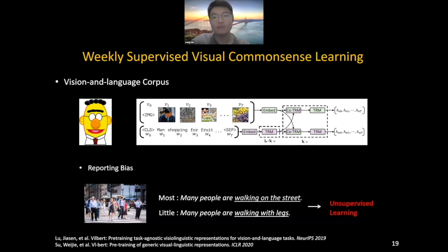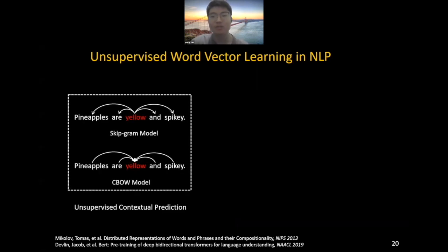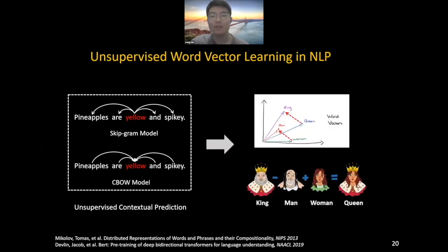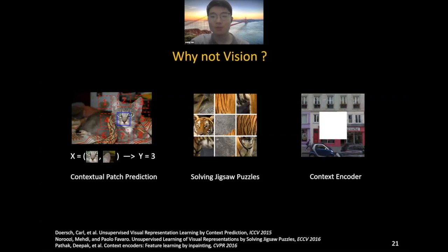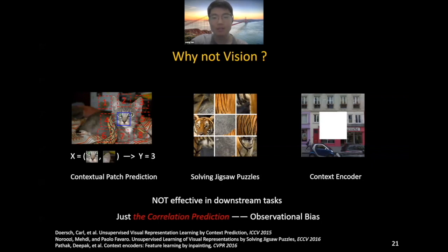In fact, we humans naturally learn common sense in an unsupervised fashion by exploring the physical world. Can machines learn visual common sense with unsupervised learning? A successful example is in our sister NLP community to learn word vectors. A word representation X is learned by predicting its contextual word Y, and finally used to encode common sense — for example, king minus man plus woman equals queen. In vision, a few previous works have tried this pattern, such as Contextual Patch Prediction, Solving Jigsaw Puzzles, and Context Encoder. But they are all far from effective in downstream tasks. The reason is that in NLP, common sense knowledge has already been recorded in discourse. In contrast, once an image has been taken, the explicit knowledge behind contextualized objects will never be observed. The true common sense may be confounded by spurious observational bias in correlation prediction.